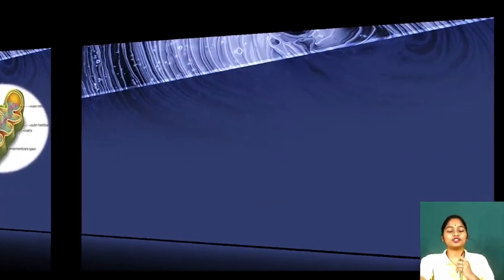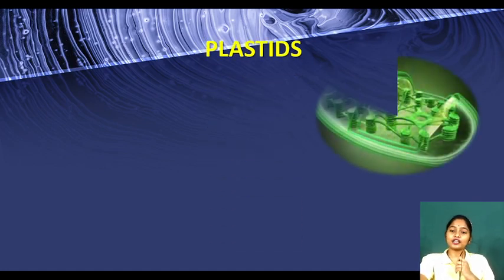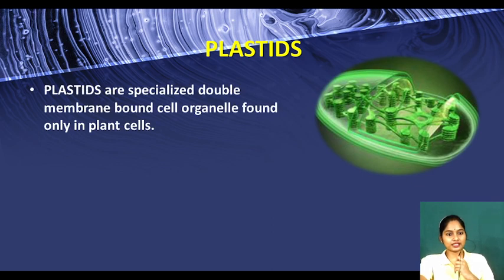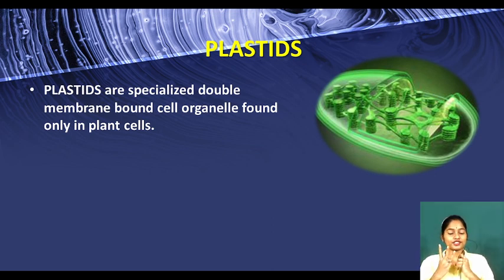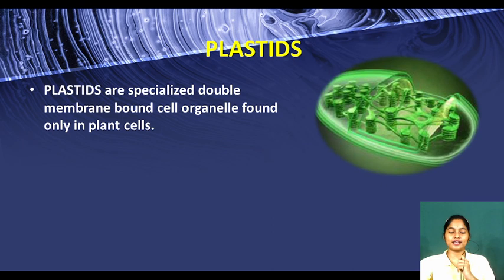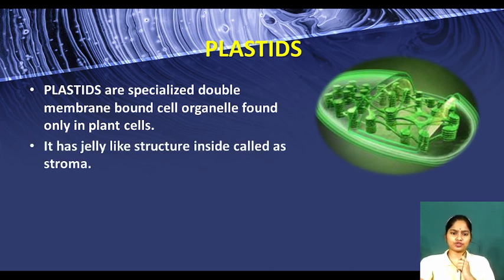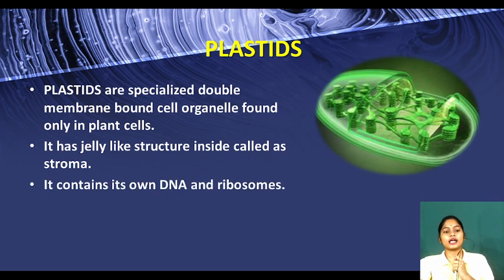Now moving to plastids, which are only present in plant cells. Plastids are specialized double membrane-bound organelles. So we now have three organelles with a double layer: nucleus, mitochondria, and plastids. Plastids are found only in plant cells. Inside, they have a jelly-like structure called stroma. Plastids also contain their own DNA and ribosomes, so they are independent organelles just like mitochondria.